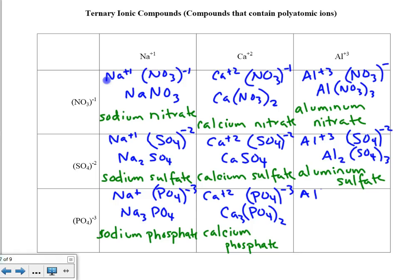The last one on this page: Al⁺³ and PO₄⁻³. Because the charges are identical in magnitude, the formula just becomes AlPO₄ — parentheses drop because I only need one of those phosphates. The name of this substance is aluminum phosphate.